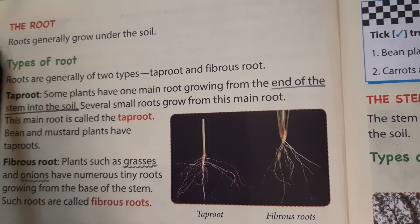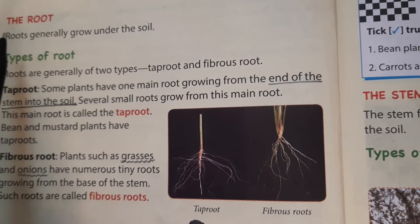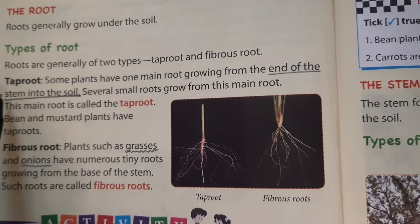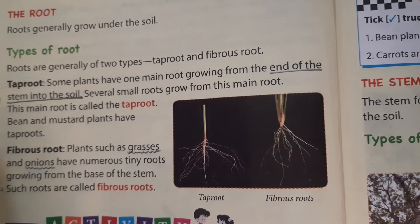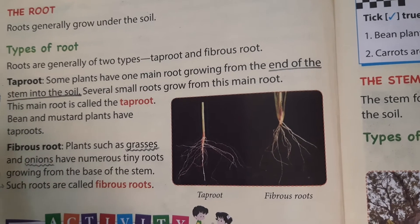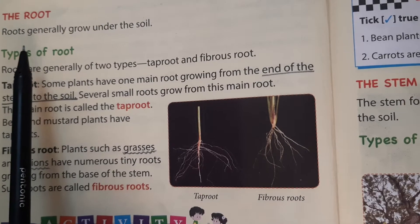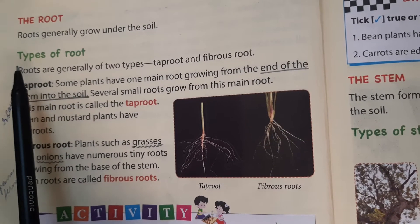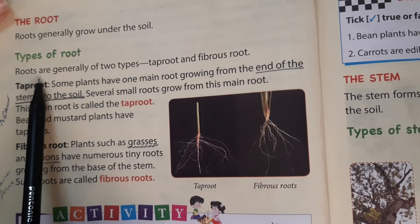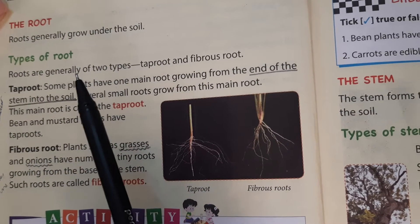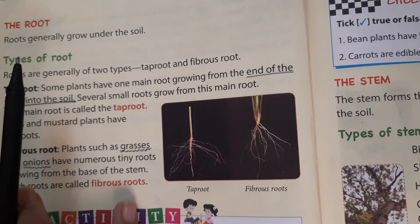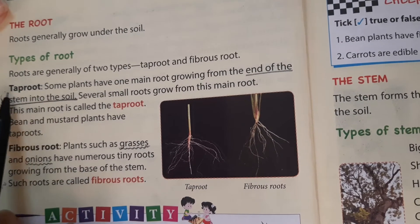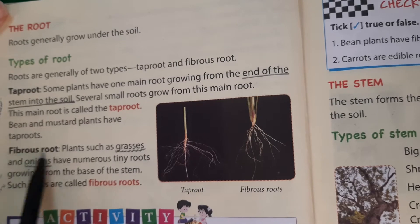Now the next topic of the chapter is roots. Roots generally grow below the soil. I have already shown you that roots are the part of the plant that grows below the soil. There are generally two types of roots: the first is the tap root, and the second is the fibrous root.